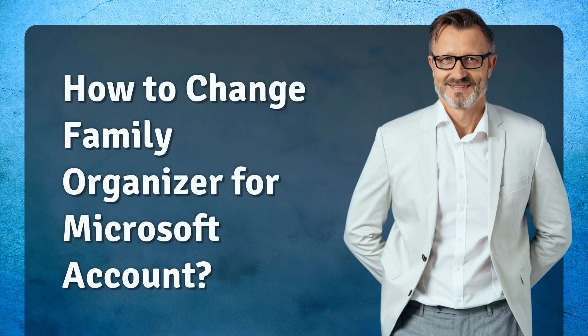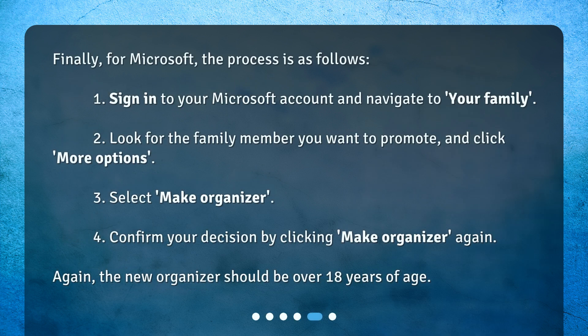How to change the family organizer for a Microsoft account? Finally, for Microsoft, the process is as follows. 1. Sign in to your Microsoft account and navigate to Your Family. 2. Look for the family member you want to promote and click More Options. 3. Select Make Organizer. 4. Confirm your decision by clicking Make Organizer again. Again, the new organizer should be over 18 years of age.